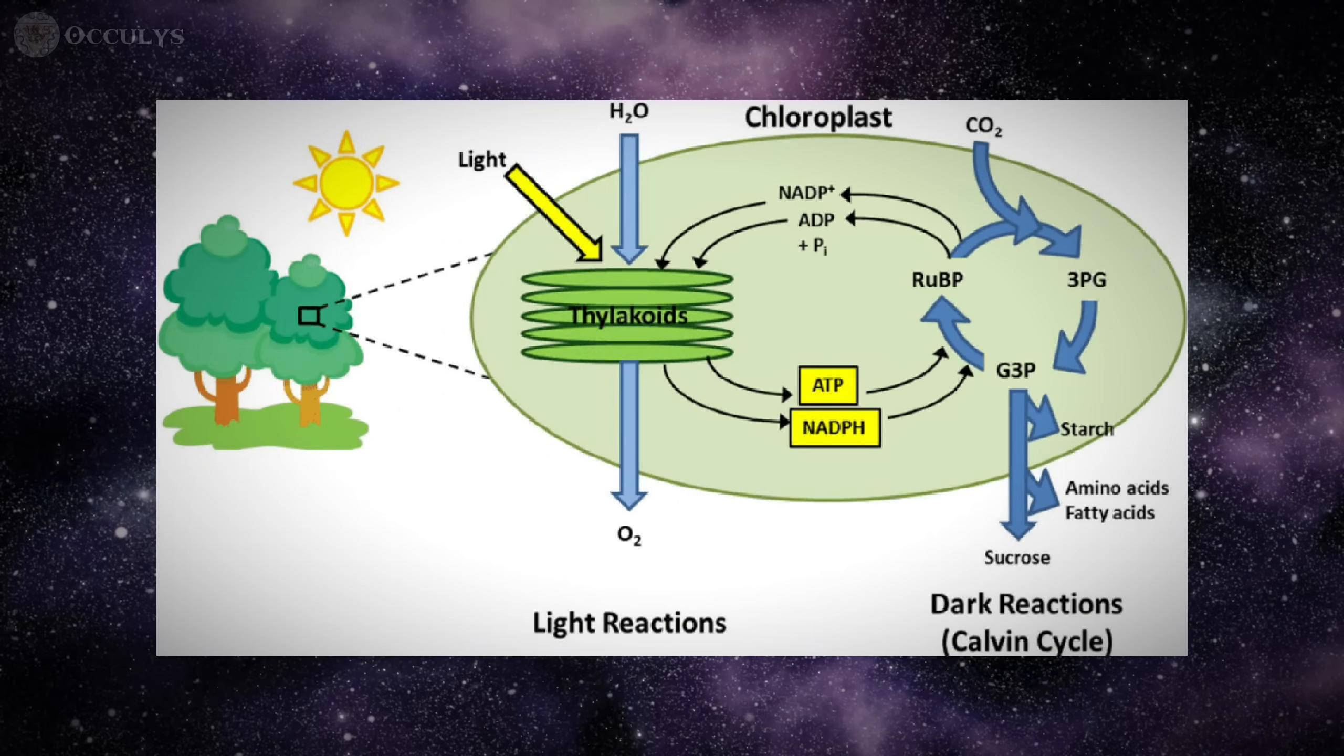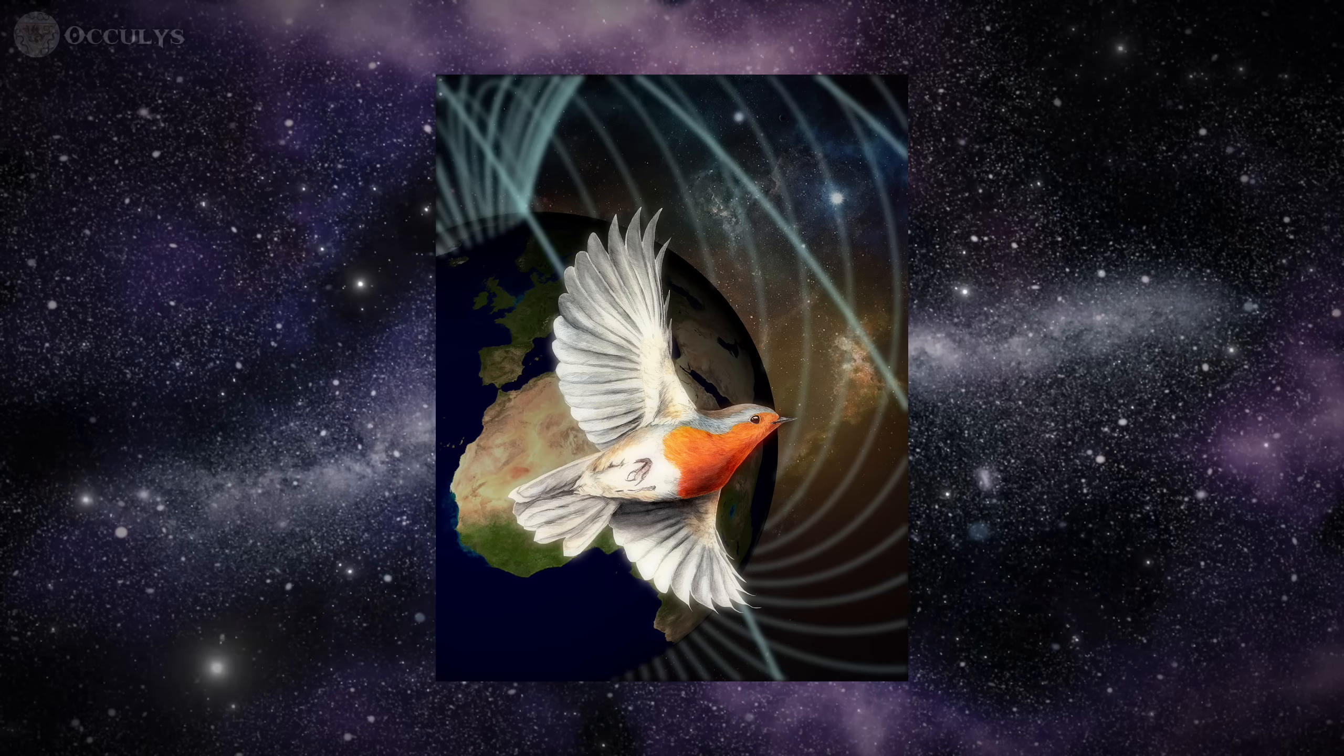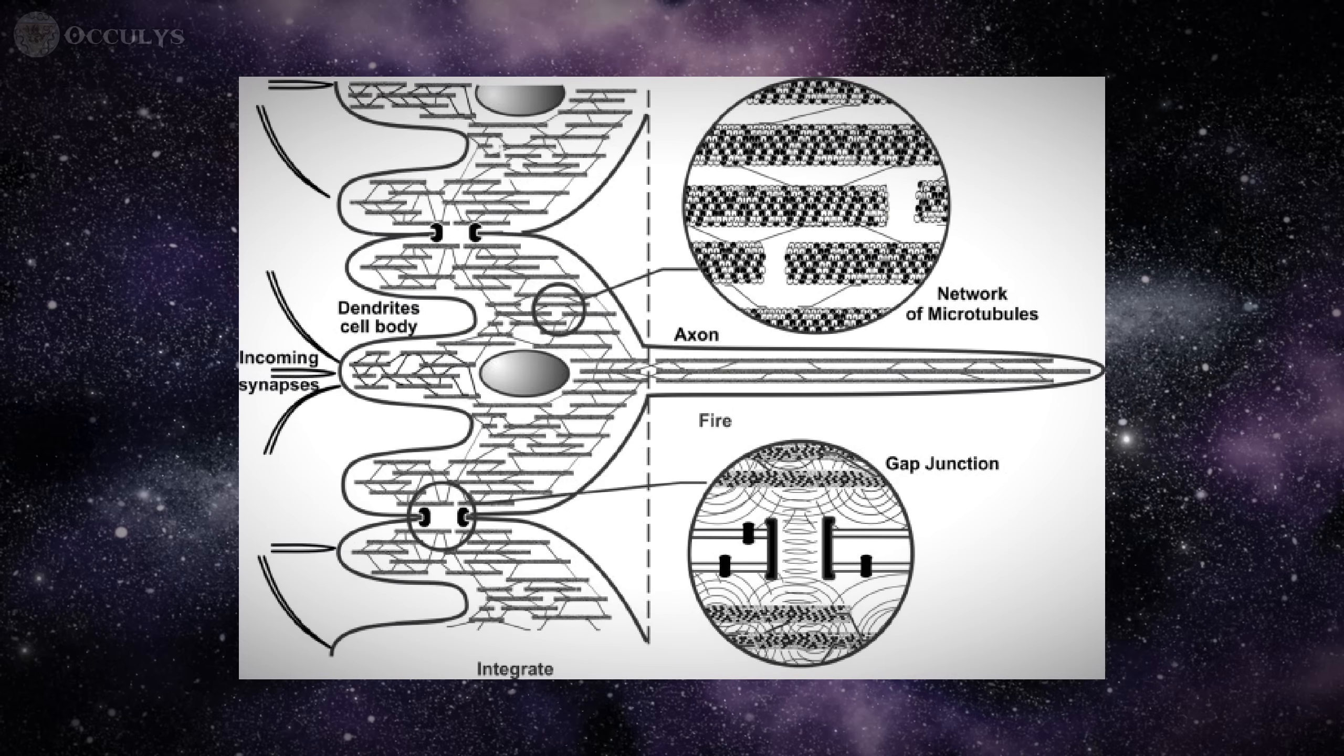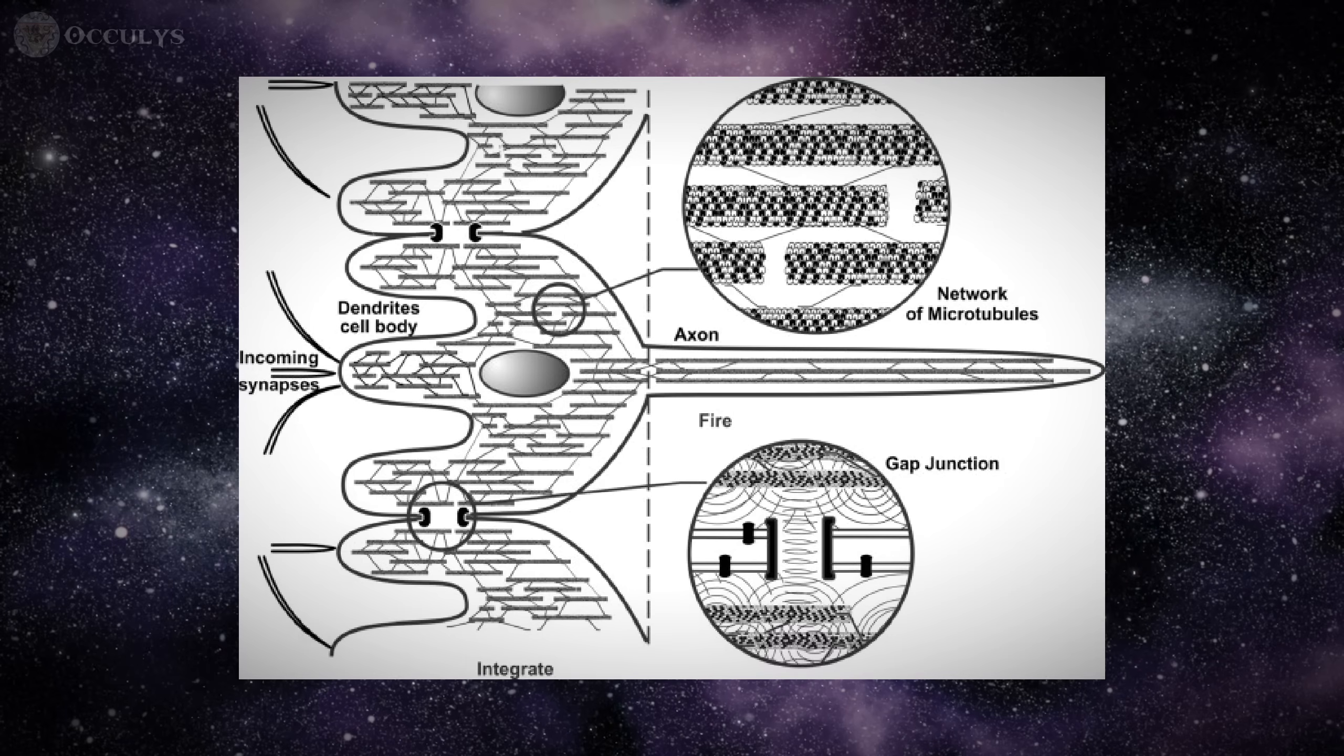Proponents, however, point to the growing field of quantum biology, which shows that processes like photosynthesis and avian navigation successfully harness quantum effects in similar environments. Orch-Or theory specifically proposes that microtubules within neurons may act as natural shields, using their unique structure to protect these quantum states. From this perspective, the brain is not a hostile environment for quantum mechanics, but a system that evolved to utilize it.